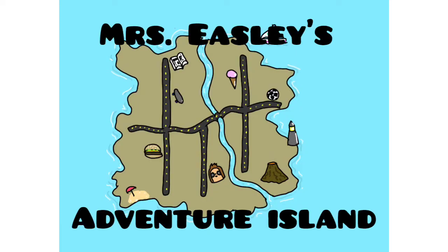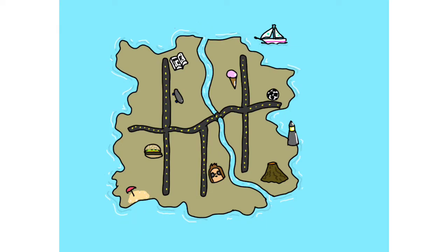Here we are at Mrs. Easley's Adventure Island! It has got all sorts of cool stuff. We've got a beach, a burger place, a skate park, library, ice cream place, marina, soccer field, lighthouse, volcano, and even a spot for Henry to set up his taco truck.